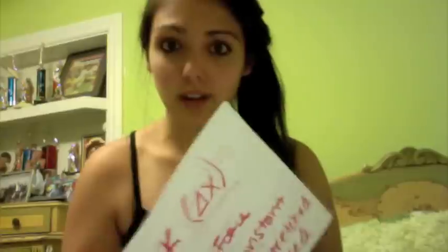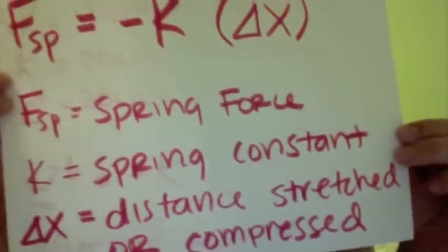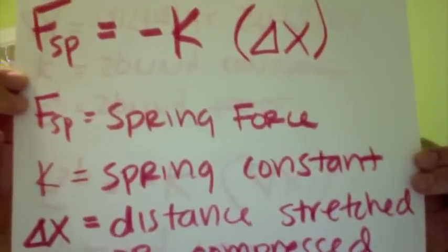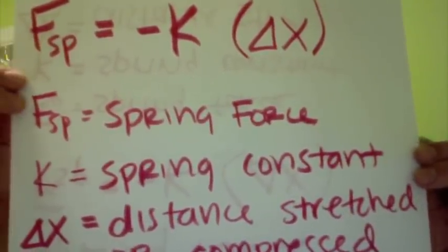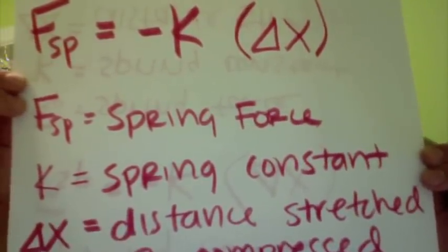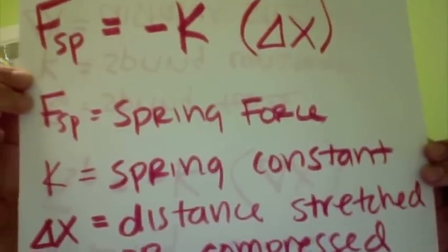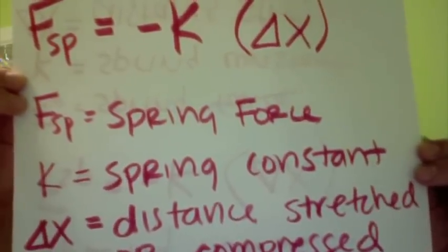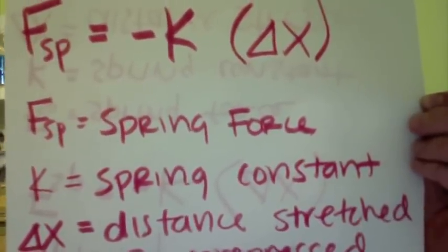This is the equation for the spring force. Spring force equals negative K, which is the spring constant. K is the springiness of the object, multiplied by the distance stretched or compressed.